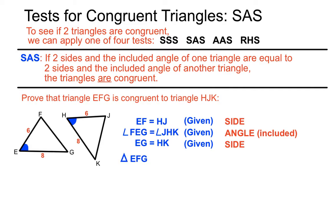We can now make the statement that triangle EFG is congruent to triangle HJK. Why? Because it's passed the test for SAS. We had a side statement, an angle statement for an angle that's in between the two sides we're using, and another side statement — adding up to enough information. So those two triangles are congruent because we listed enough information to pass the SAS test for congruent triangles.